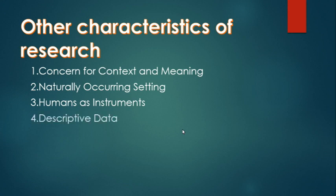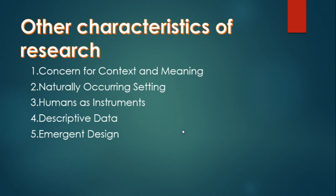Number four: Descriptive data. Data in qualitative studies are in the form of words, pictures, or other visuals rather than numbers and stats. Number five: Emergent design. In qualitative research, the design cannot be finalized at the onset because the researcher continues to adjust his or her methods and ways of proceeding as the study progresses.